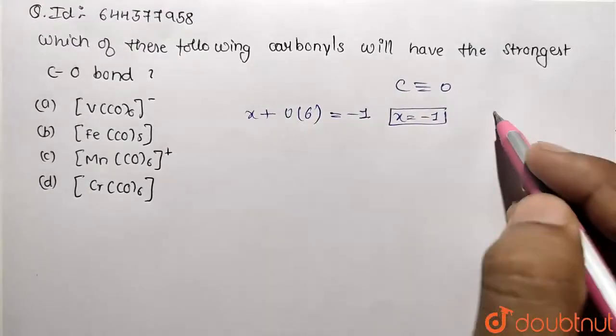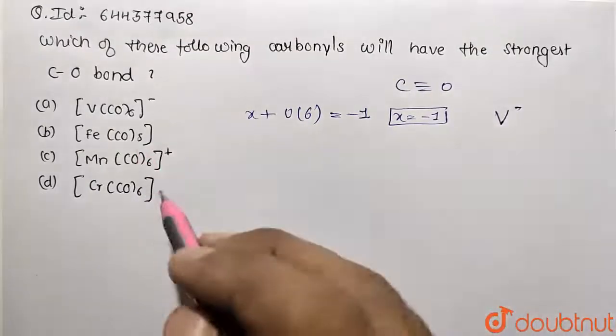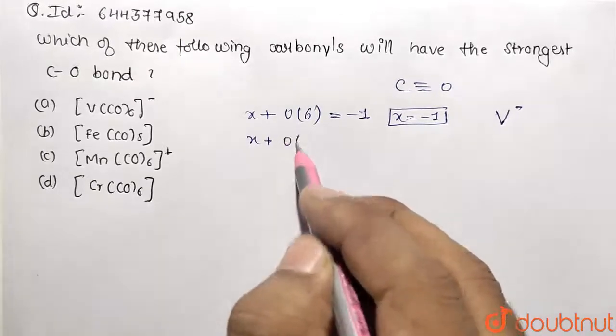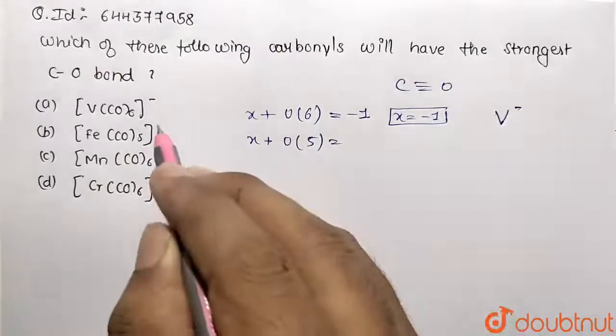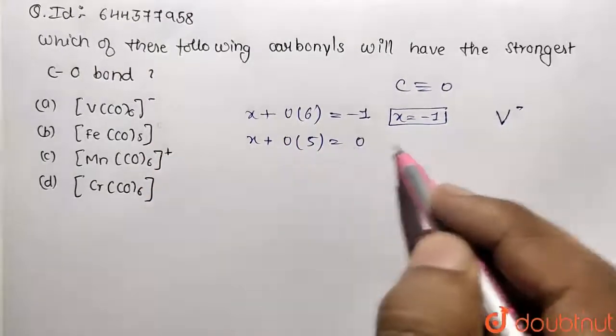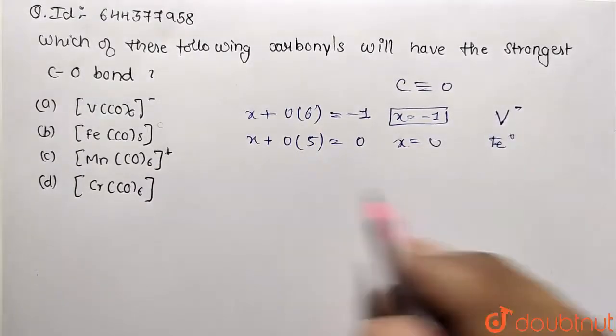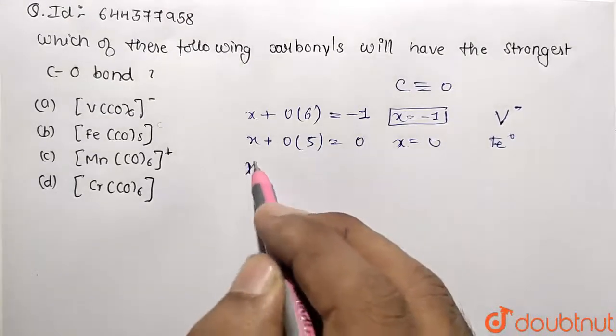That means vanadium is present with negative charge. Similarly you can work over here, carbonyl is neutral ligand so 0 multiplied by 5 and overall charge is not given so we assume it to be 0. So oxidation state of iron comes out to be 0 only. So this is present in ground state.